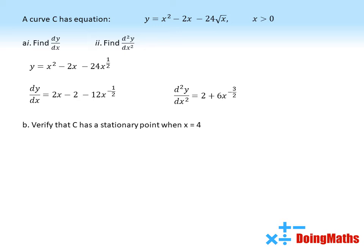Part b is verify that c has a stationary point when x equals 4. To show that something has a stationary point, we need to show that the gradient is 0. So we take our dy by dx and substitute 4 into the equation.